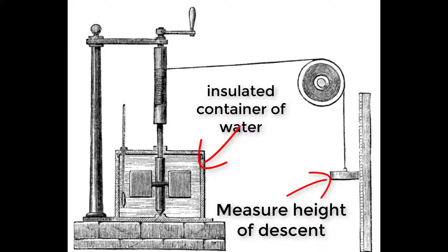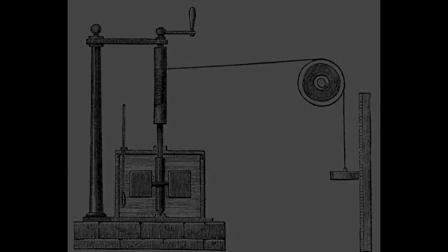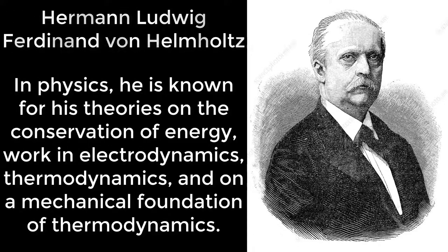He went on to assert that no energy was ever lost in this conversion. His ideas were largely ignored until 1847, when German physicist Hermann Helmholtz published a paper summarizing the theory of the conservation of energy, and Joule then presented his work at the British Association in Oxford. The standard unit of energy, a joule, is named after him.